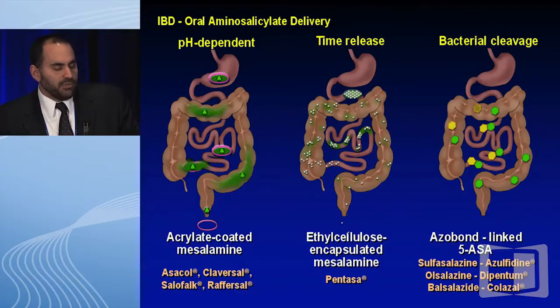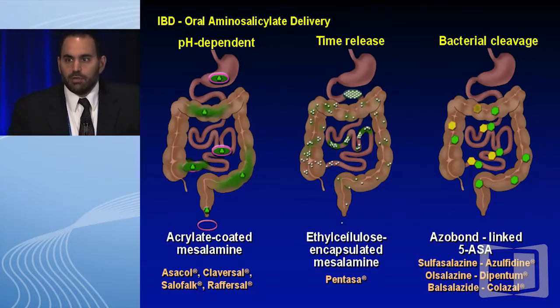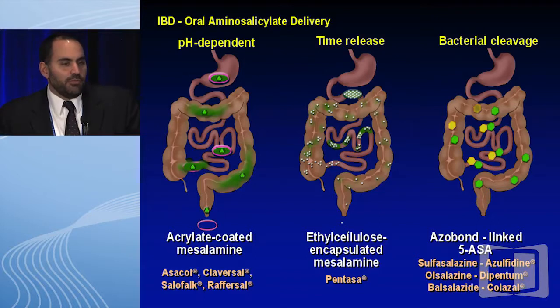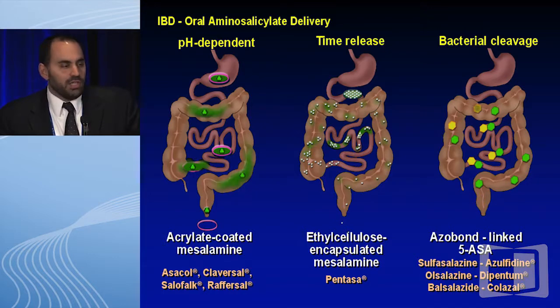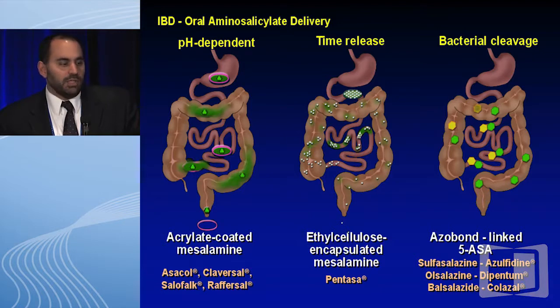The differences in the various 5-ASAs are related to their release. You have three types of release mechanisms. One is pH-dependent release, like Asacol HD or Lialda. Then we have time-release mechanisms with more proximal release — a product like Pentasa. And then there are a couple of agents released by bacterial cleavage in the colon, where azoreductase in colonic bacteria cleave the bond to release the 5-ASA. That's sulfasalazine and balsalazide.